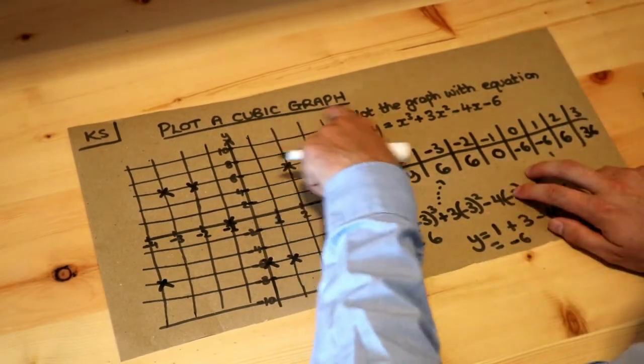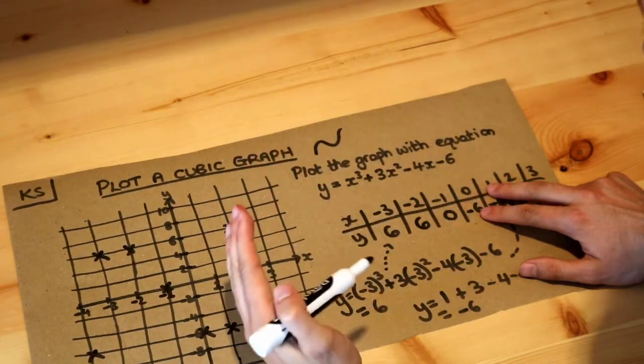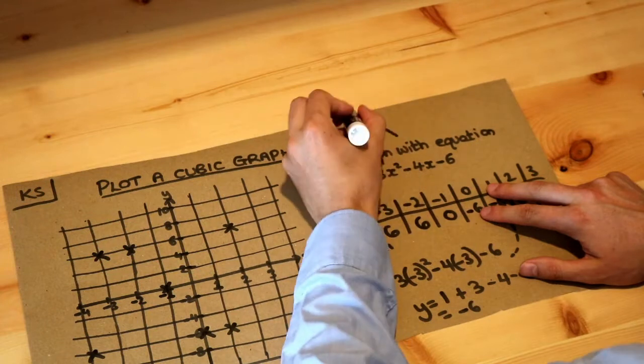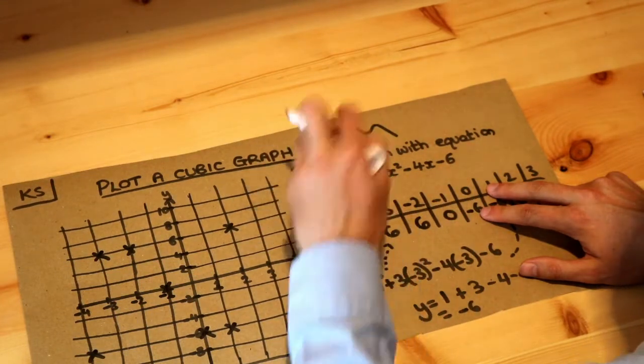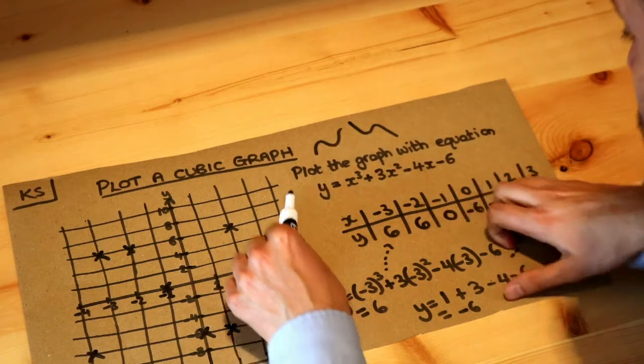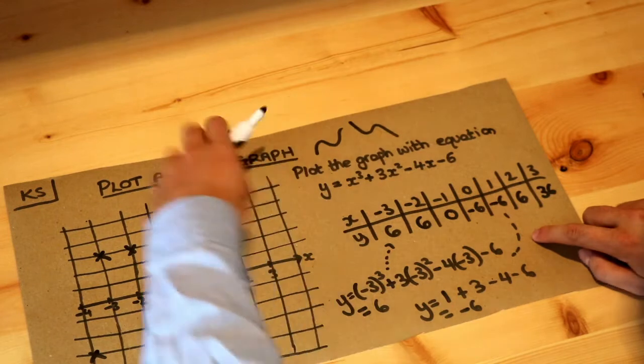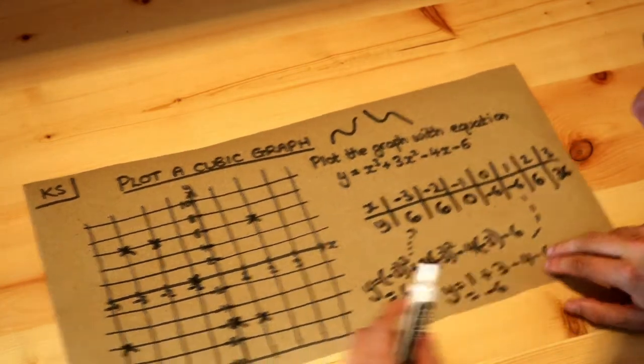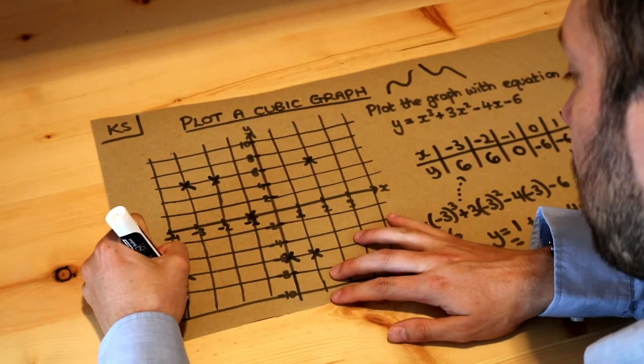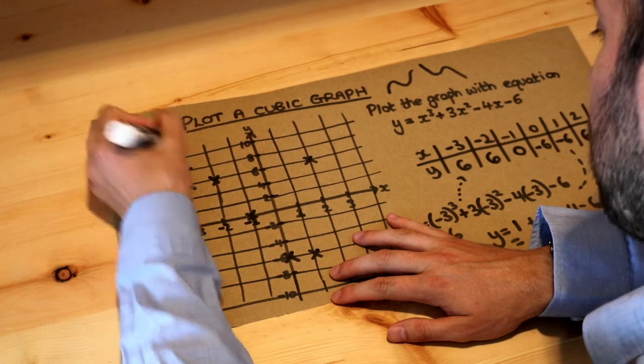And basically what cubic graphs usually look like is either some kind of uphill roller coaster shape, so it kind of goes up then down and up again, or it's a downhill roller coaster shape. Well we've got two turns in each case. So here look, our line sort of swerves right and then eventually it swerves left. Whereas in this second one it's coming down, it swerves left and then it swerves right. So that's the shape we're going to get. If I sort of join these points up with a smooth curve because cubics give a smooth curve.